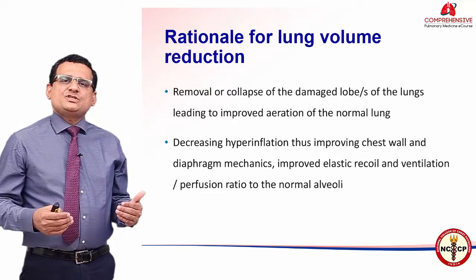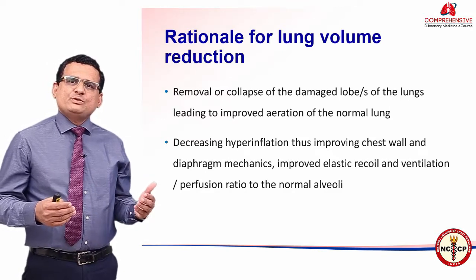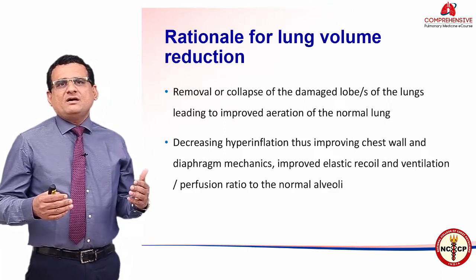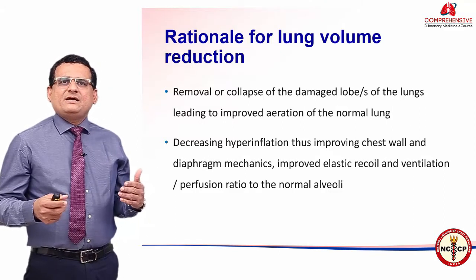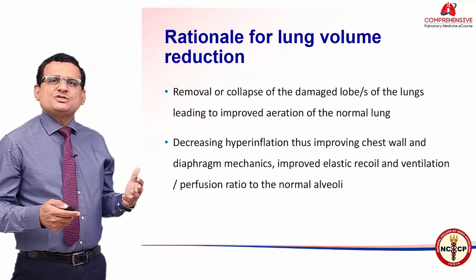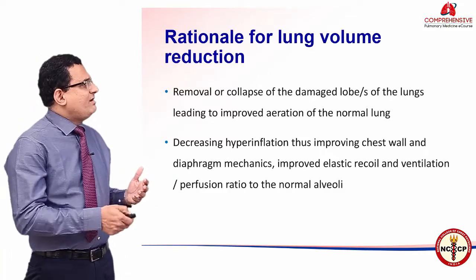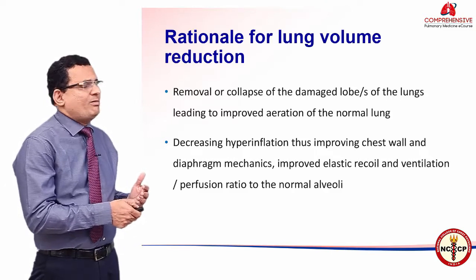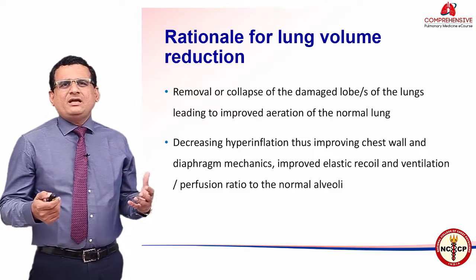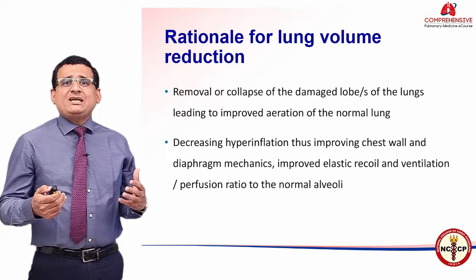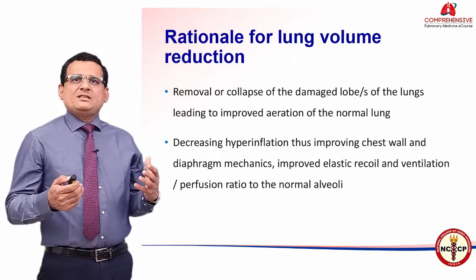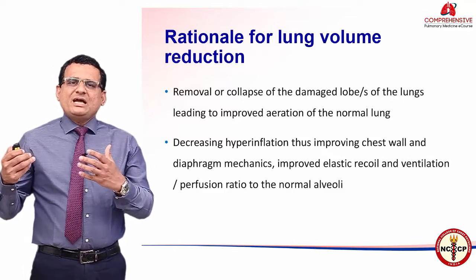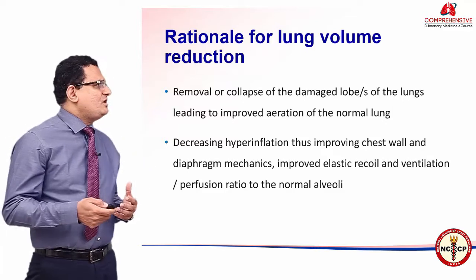Lung volume reduction surgery was introduced for COPD emphysema in the early 90s. The rationale was that removal or collapse of the damaged lobe of the lungs leads to improved aeration of the normal lung. This was particularly used for patients having heterogeneous emphysema — specifically upper lobe emphysema — where that lobe was removed to improve aeration in the normal lung.